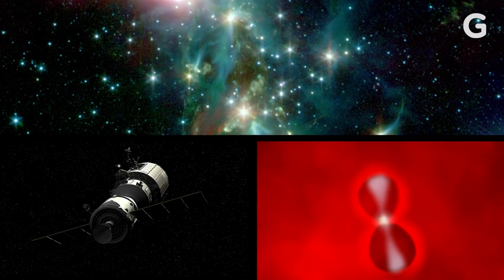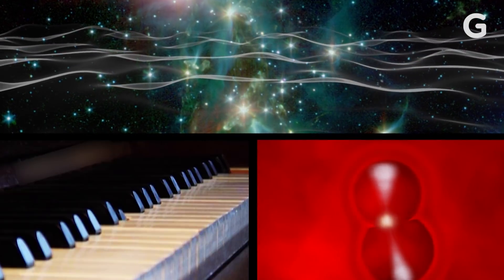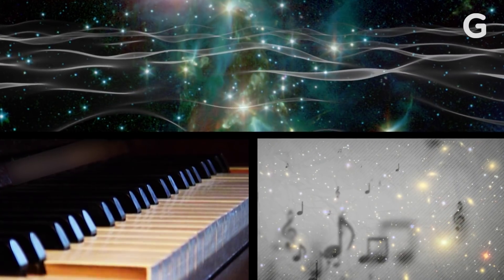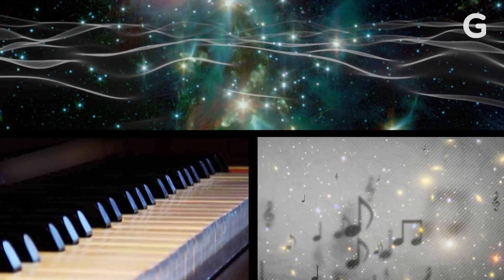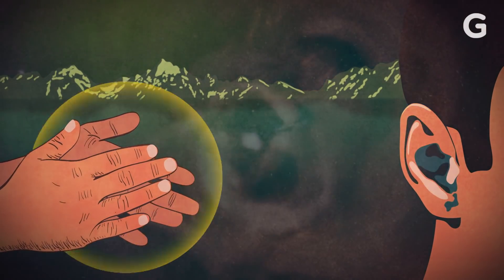Scientists have figured out that the pitch of these sound waves is something like a B-flat, but 57 octaves below middle C. And so that's not something that we can hear with our ears, because that's not within the range that our ears are able to detect.